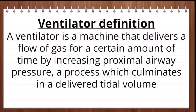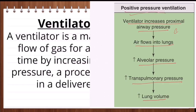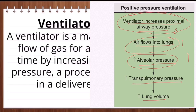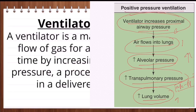In positive pressure ventilation, the ventilator increases the proximal airway pressure. With this increase in proximal airway pressure there is airflow into the lungs. With this airflow into the lungs there is an increase in alveolar pressure. With the increase in alveolar pressure there is an increase in transpulmonary pressure — which is the difference between alveolar pressure minus pleural pressure — and ultimately this results in an increase in lung volume.